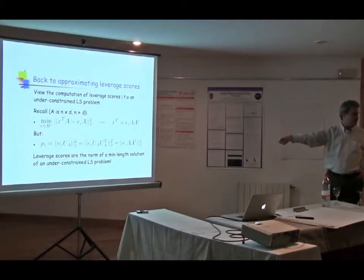But PI, which is the leverage score you want up to some scaling. But PI is equal to EI, the canonical basis, dotted into U. It's the Euclidean norm of that row. You can add that without changing anything. So it's EI dotted into this.